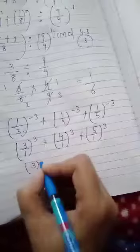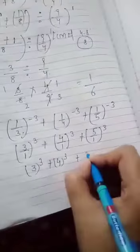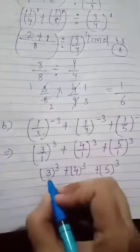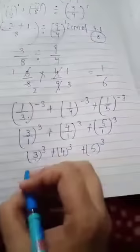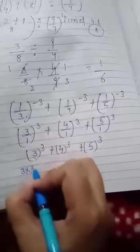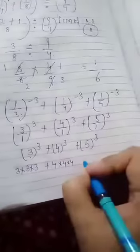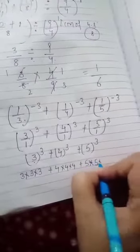3 cube plus 4 cube plus 5 cube. What is 3 cube? 3 raised to power 3 means 3 multiplied 3 times. Same for 4 multiplied 3 times and 5 multiplied 3 times.